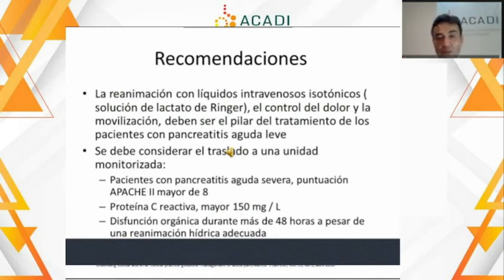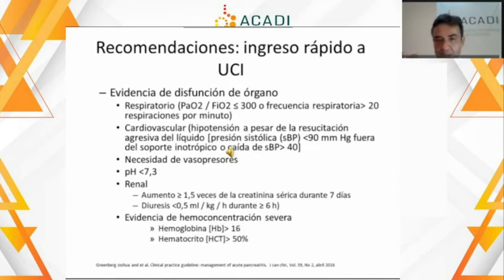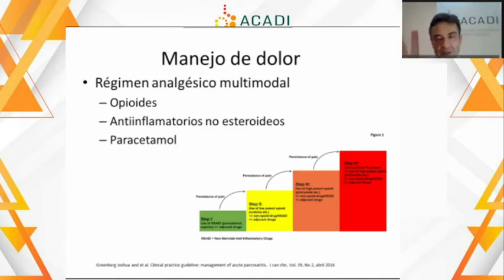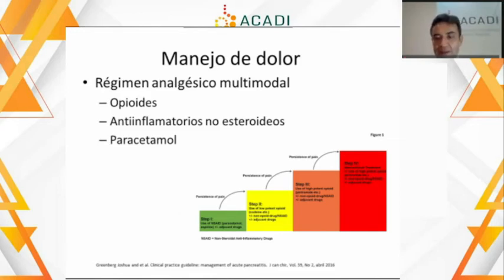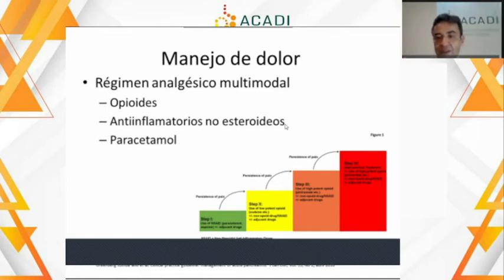El primer punto de manejo es controlar el dolor del paciente agresivamente. Aquella leyenda urbana de que no se deben administrar analgésicos al paciente con dolor abdominal ya claramente está desestimada. Hay que manejar el dolor abdominal agresivamente con opioides. No modifican el curso de la enfermedad. Había temor por los efectos de la morfina en el esfínter de Oddi, pero un análisis mostró que los opioides son el medicamento de elección porque tienen efecto importante en el paciente con dolor severo, hay que usarlos libremente y precozmente.